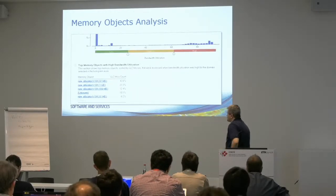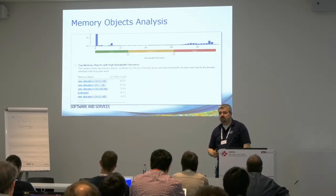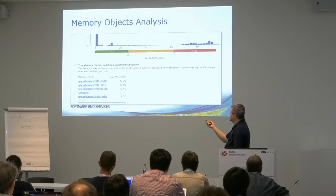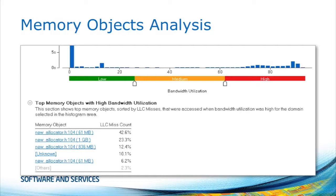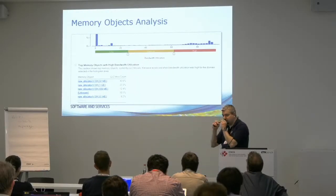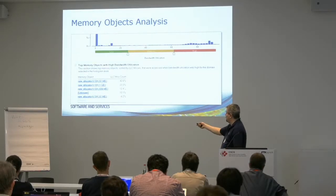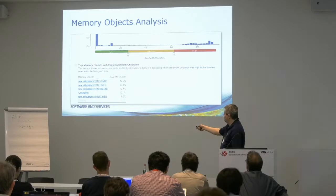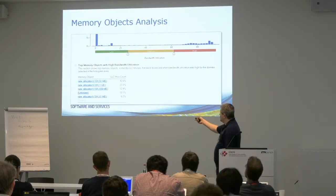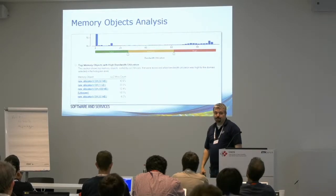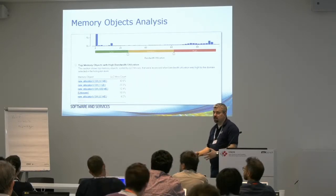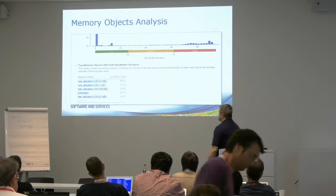Better than nothing. What it tells you is exactly what you're interested in: for the memory object allocated in line 104 with 61 megabytes, you have 42% miscount on the last level cache. Then you can look at this data structure — you don't have to investigate memory traffic for all of your 100 data structures. You can focus on the ones that VTune picks out, saying these are the top four or five allocations where you're having most of the last level cache misses. Then you can focus on those data structures to improve locality, and then the fun starts in getting this fixed.